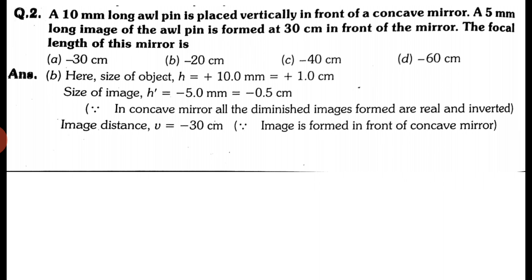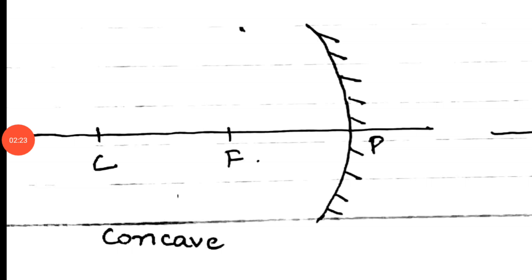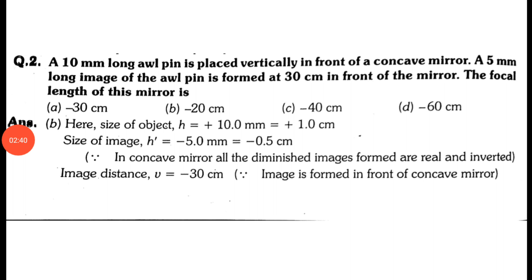The pin is placed vertically in front of a concave mirror. Since it is a concave mirror, focal length and radius of curvature will be negative — everything is on the left side. Draw a small diagram of a concave mirror.